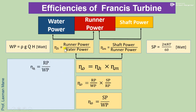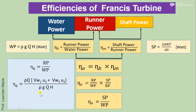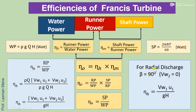From the hydraulic efficiency formula — runner power divided by water power — substituting runner power as ρ·Q·(vw1·u1 + vw2·u2) and cancelling ρ and Q, hydraulic efficiency = (vw1·u1 + vw2·u2) / (g·H). For radial discharge where vw2 = 0, hydraulic efficiency simplifies to vw1·u1 / (g·H).